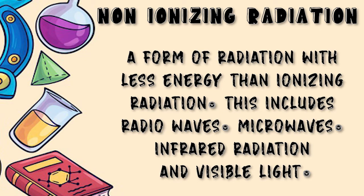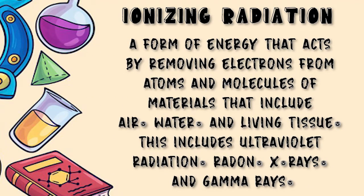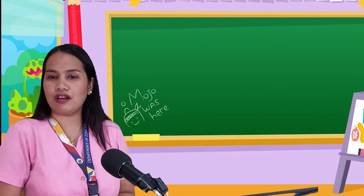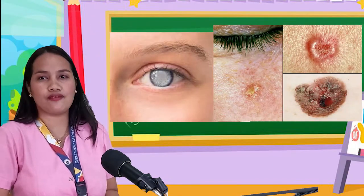Unlike ionizing radiation, non-ionizing radiation does not remove electrons from atoms or molecules of materials such as air, water, and living tissue. Ionizing radiation is a form of energy that acts by removing electrons from atoms and molecules of materials such as air, water, and living tissue. This includes ultraviolet radiation, X-rays, and gamma rays. A familiar example is ultraviolet radiation from the sun — overexposure to it may cause eye and skin damage and, in the worst case, lead to cataracts, glaucoma, or even skin cancer.